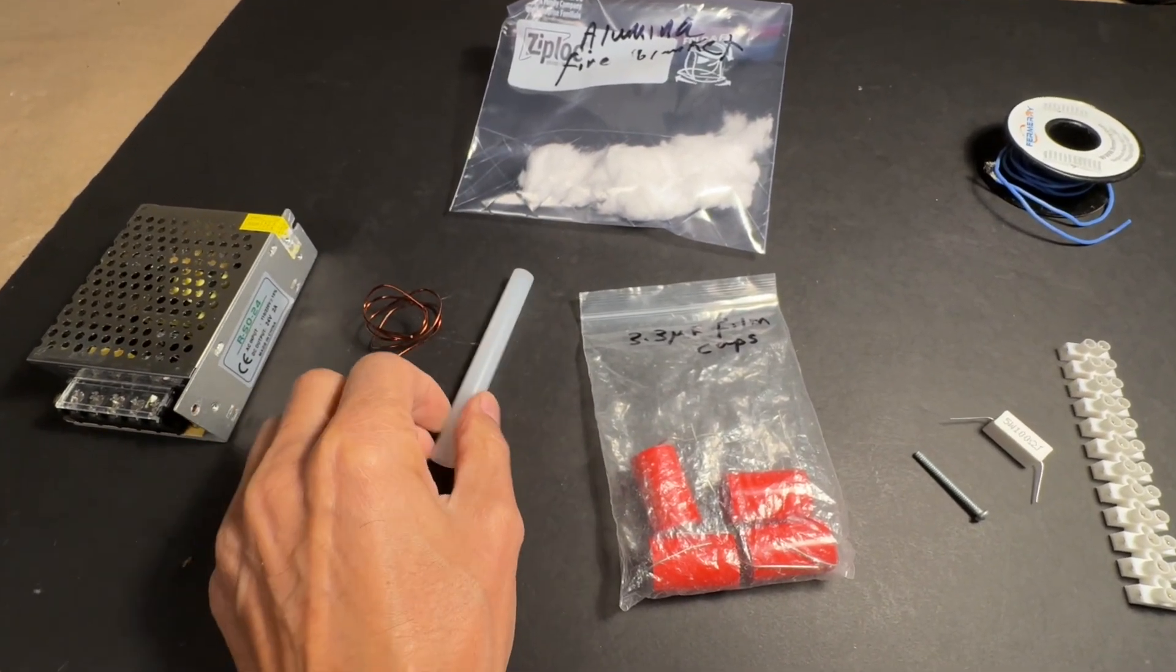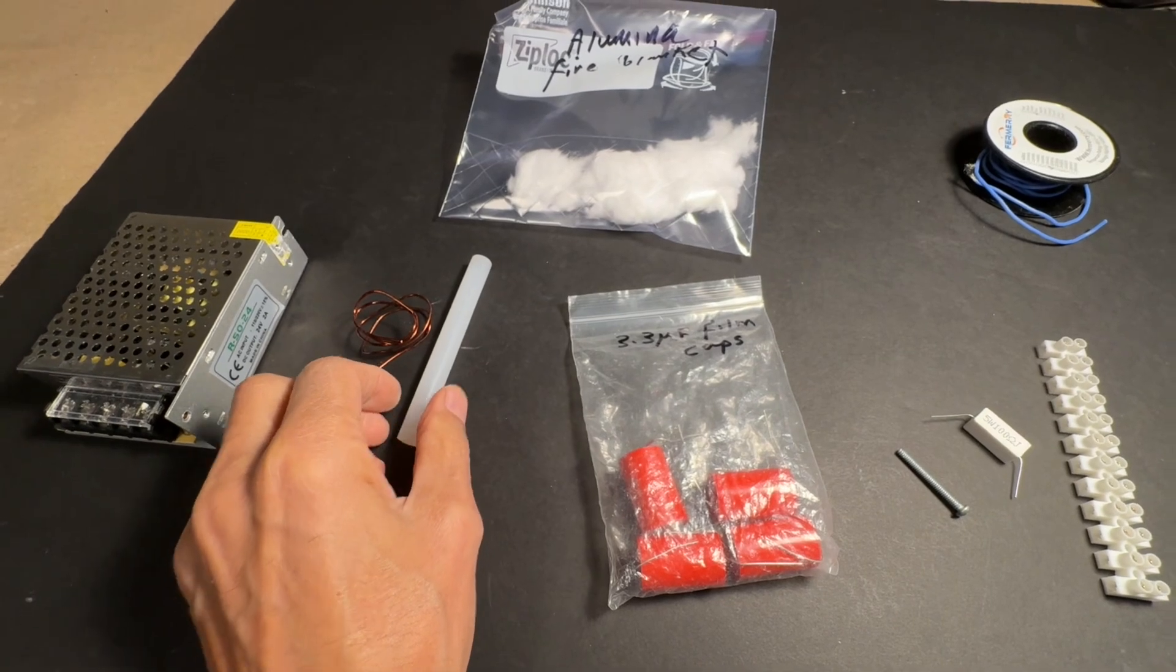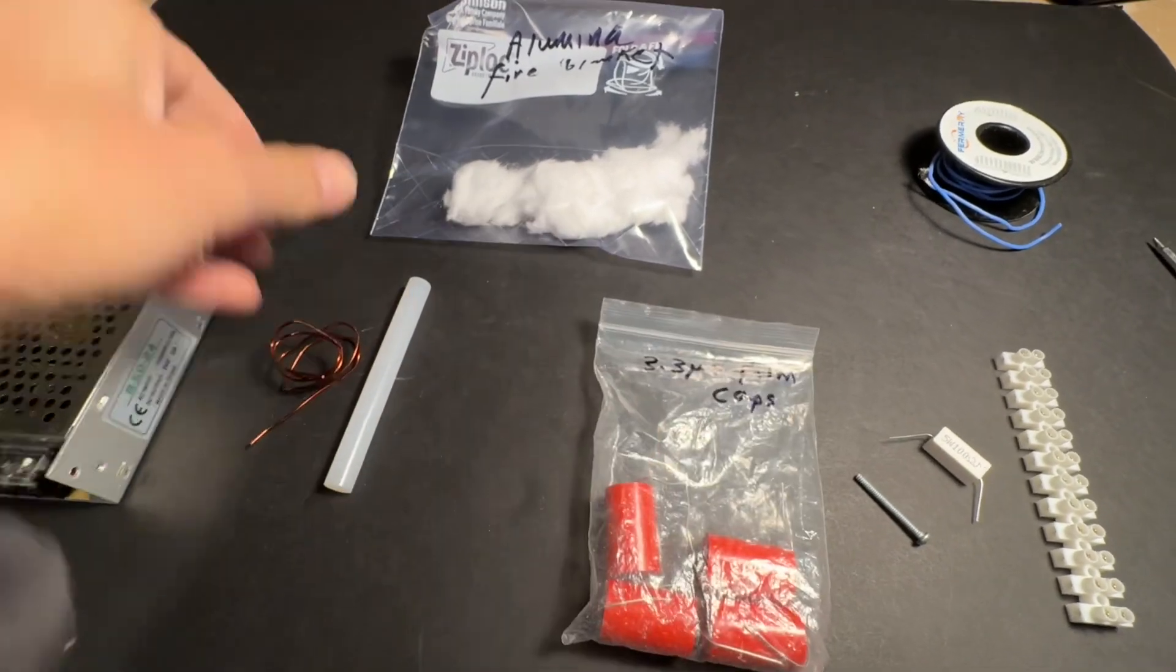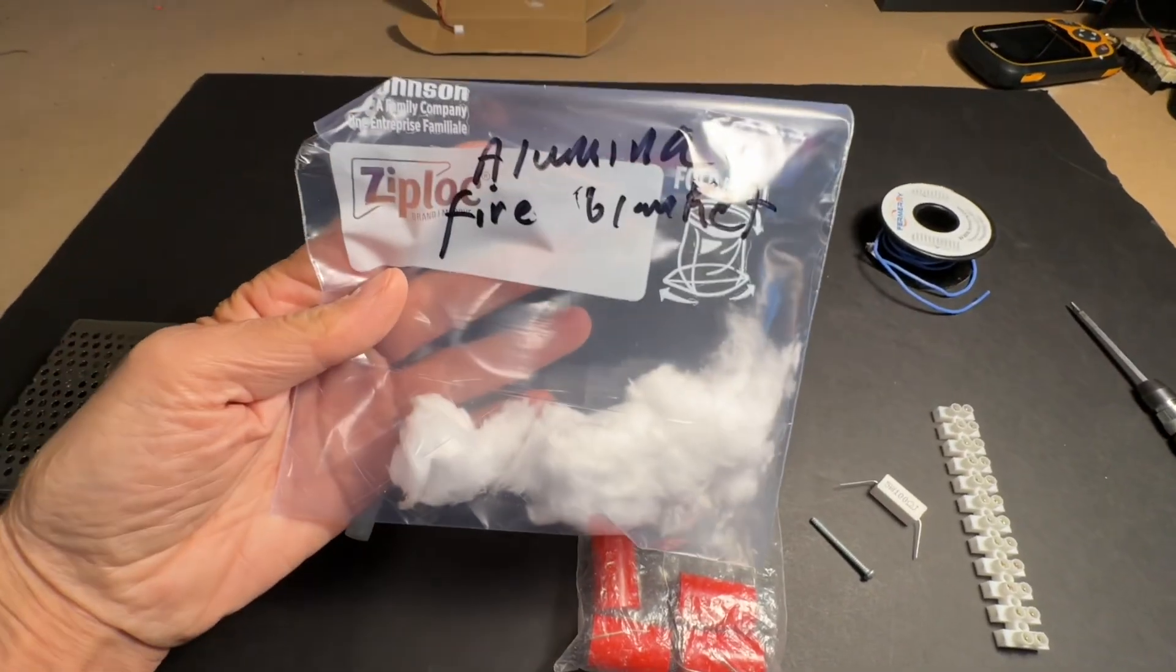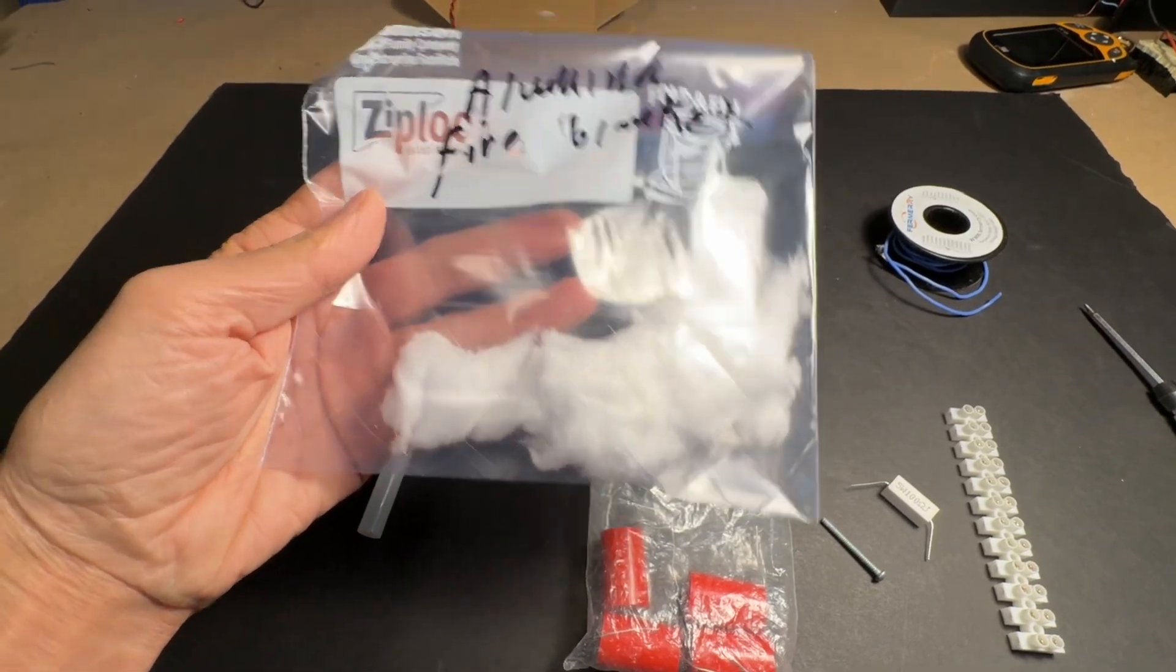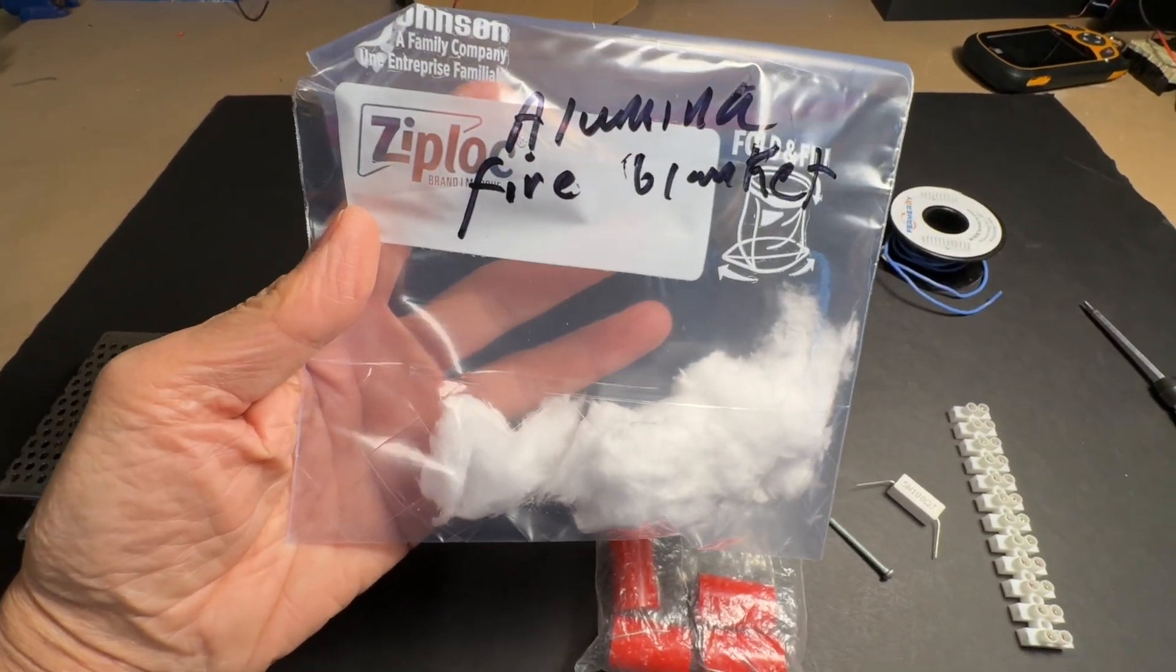to make your resonant coil, your heating coil. You're going to need some alumina, this is basically aluminum fire blanket, you can get this stuff from Amazon.